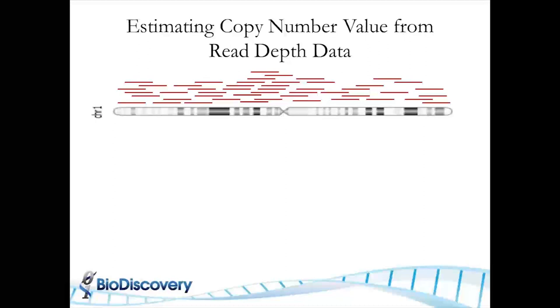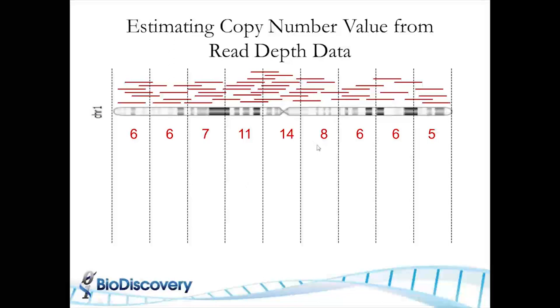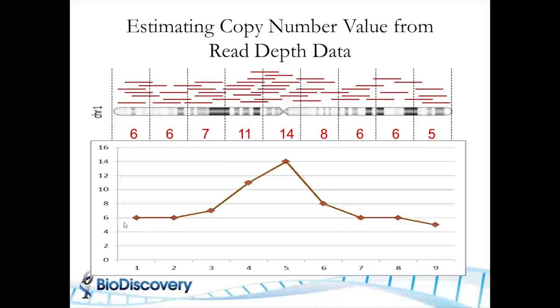So let's start with the simple approach. How do you get copy numbers from read depth? If you go by the premise that sequencing is done randomly, so you get short reads distributed uniformly across the genome, then it would be very simple. You would divide up the genome into small bins and count how many reads you're getting — six here, six here, seven here — and if you're getting 14 reads in one area, that is possibly a gain.